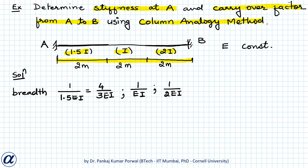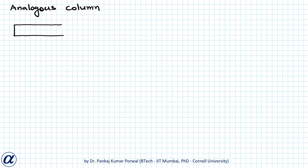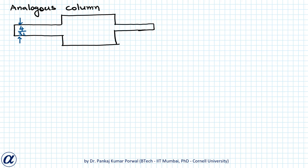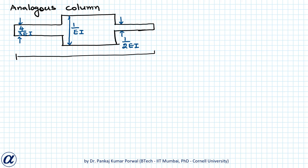So the analogous column cross section will look like this: the first segment has breadth 4/3EI, the second has breadth 1/EI, and the third has breadth 1/2EI. The width of each segment is 2 meters. Edge A is on one side and edge B is on the other side. This is the cross section of the analogous column.